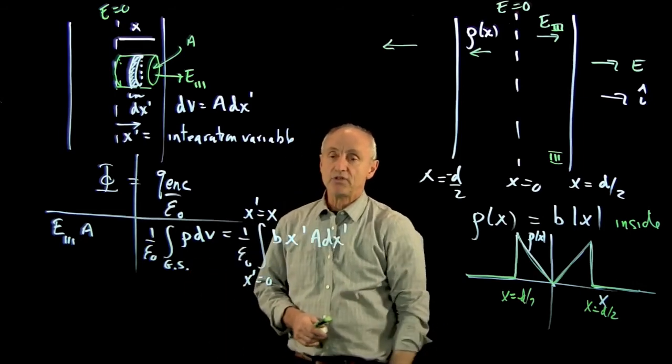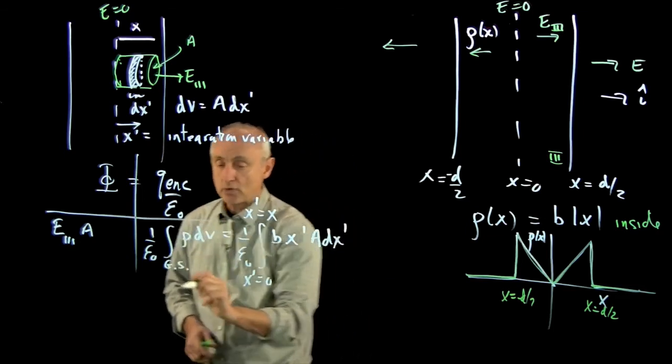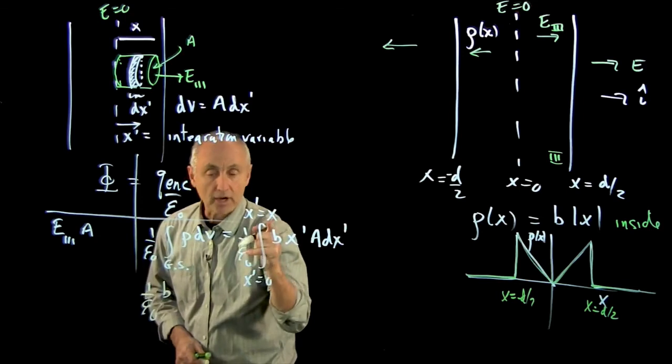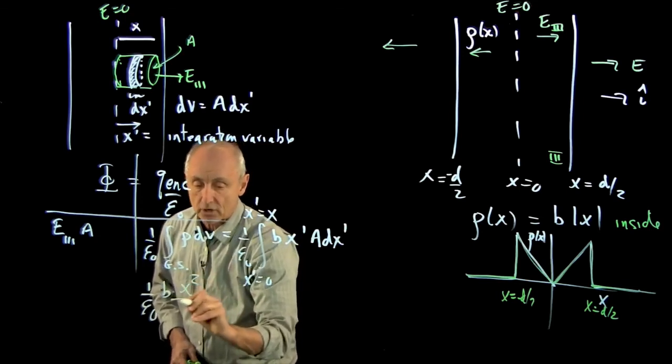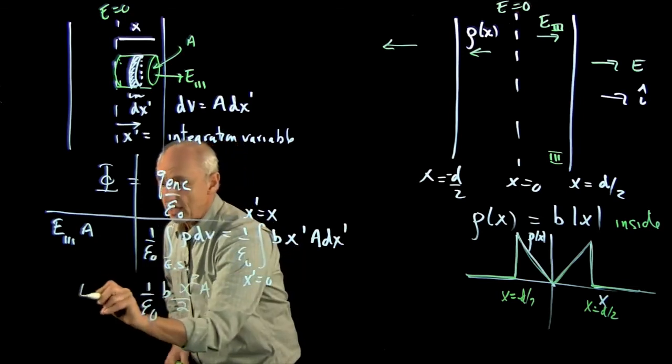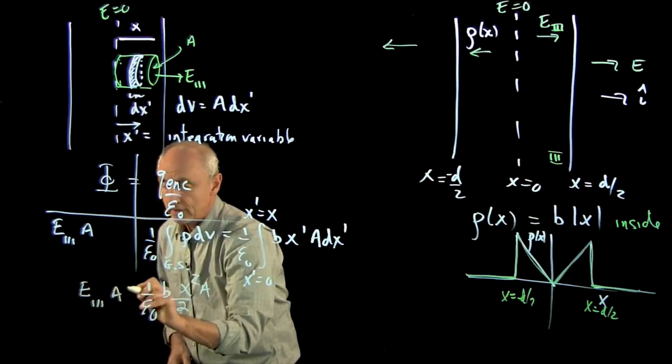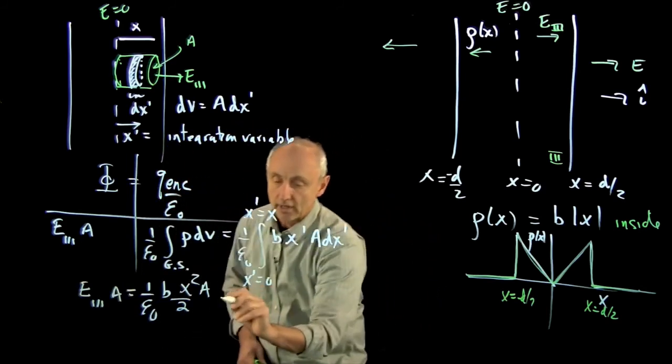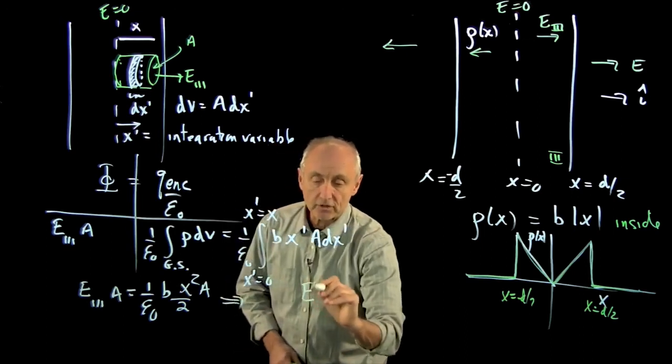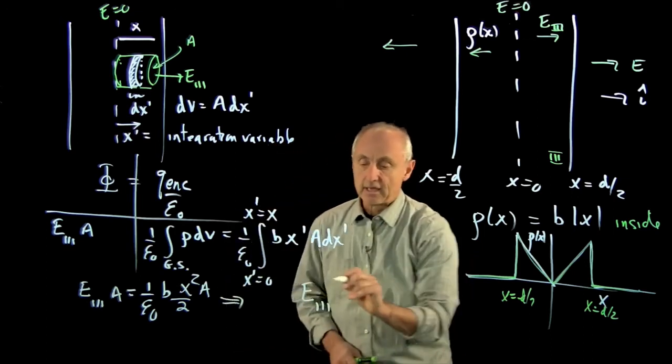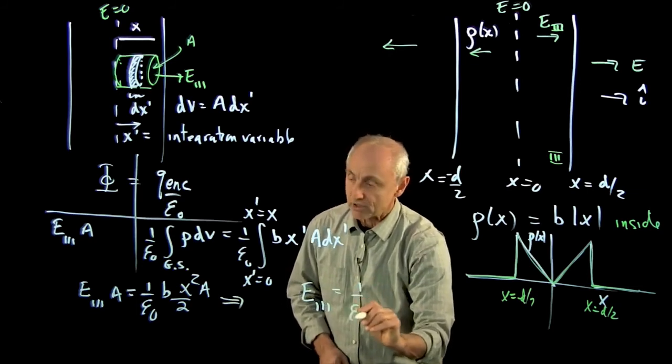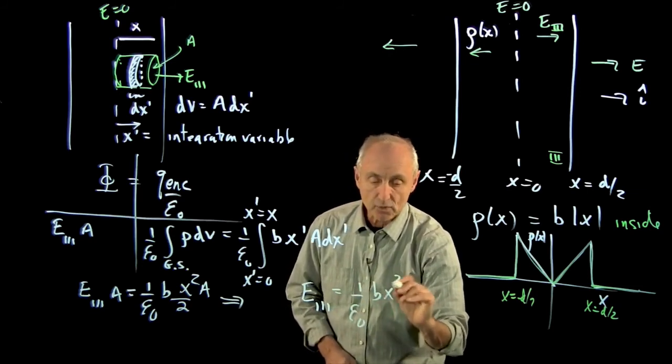And now that's an integral that's easy to do. It's x prime squared over 2. And so what we get is 1 over epsilon 0 b. When I put my limits in, I get x squared over 2 times a. I get e3a is equal to that. And I can conclude that the electric field is given with a magnitude 1 over epsilon 0 b x squared over 2. The a's cancel from both sides.